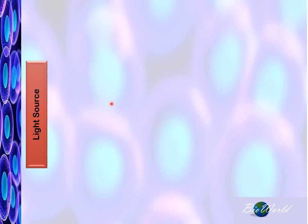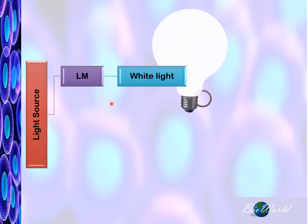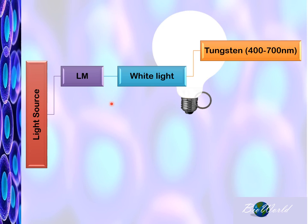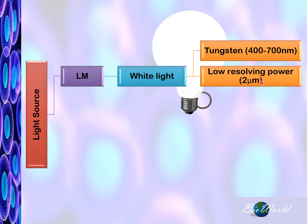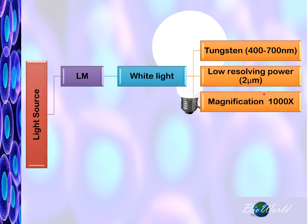Another aspect to compare between these microscopes is their light source. Light microscopes use white light with tungsten filaments, where these lights emit wavelengths between 400 to 700 nanometers. And as we know, if the wavelength is large, then the resolving power of the microscope will be low — with a minimum distance of about 2 micrometers only. And the maximum magnification that a light microscope can give is about 1,000 times.